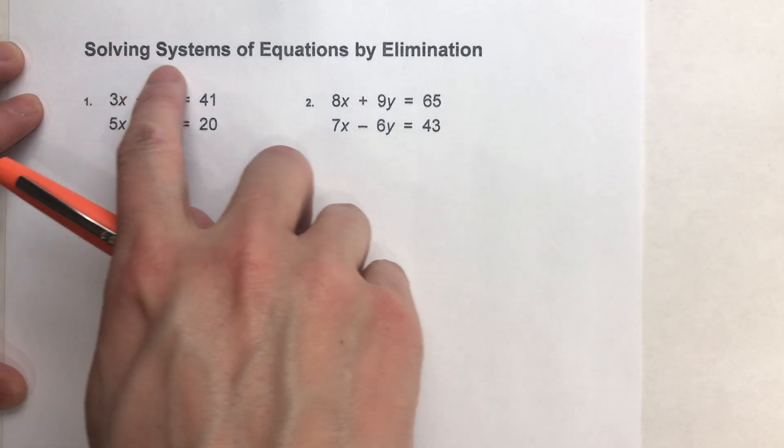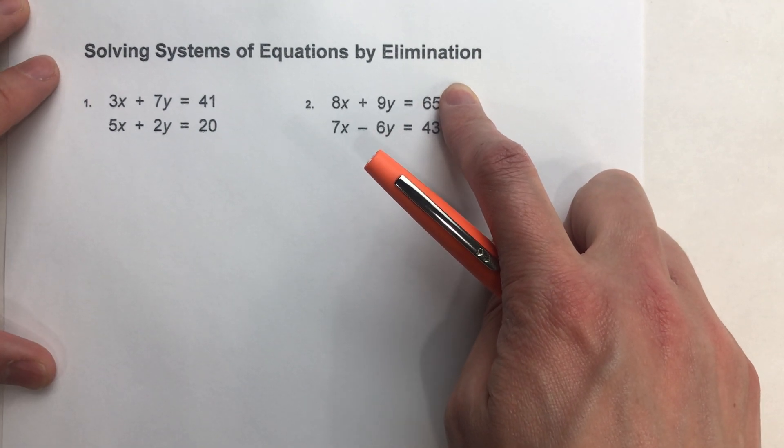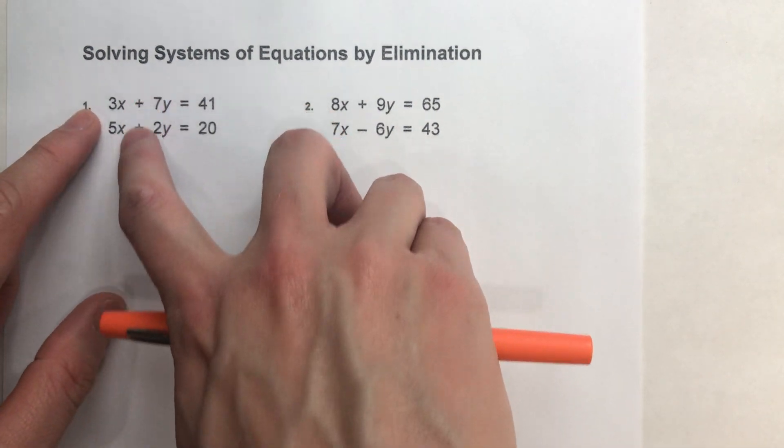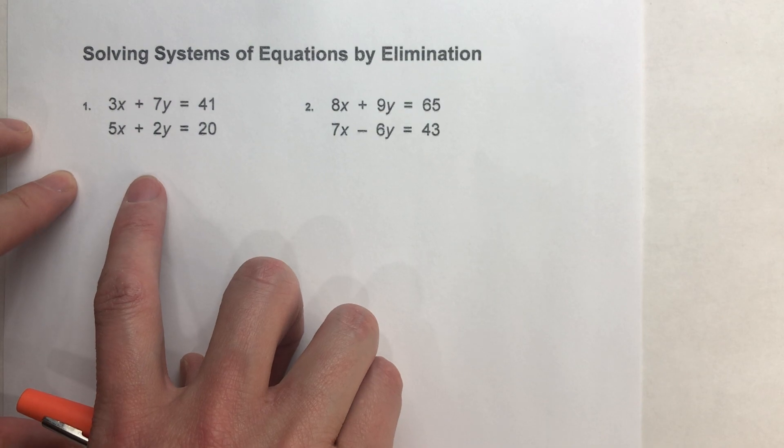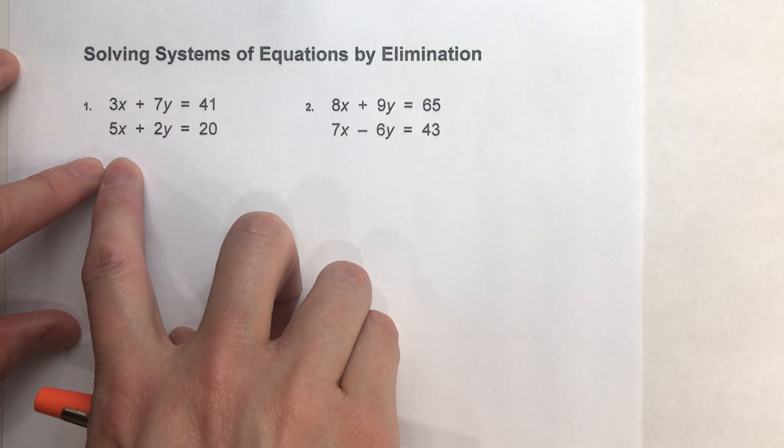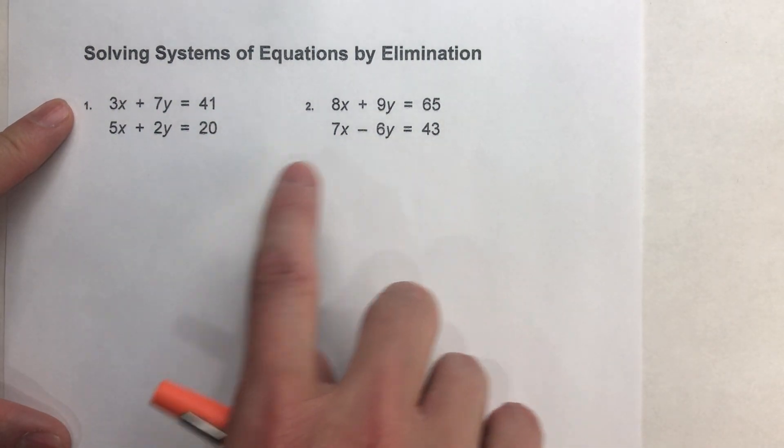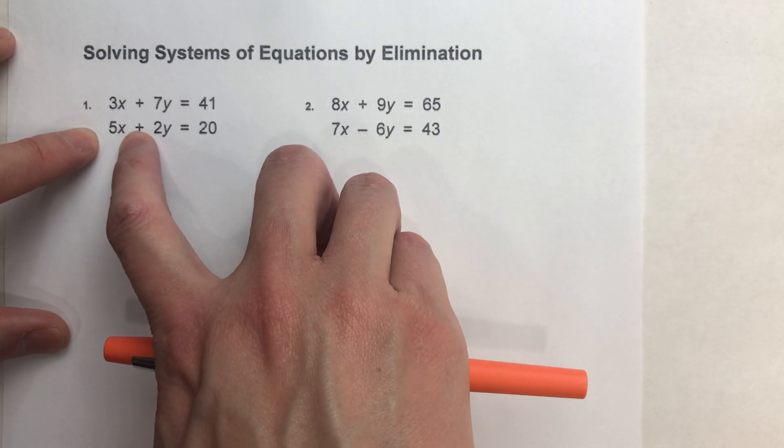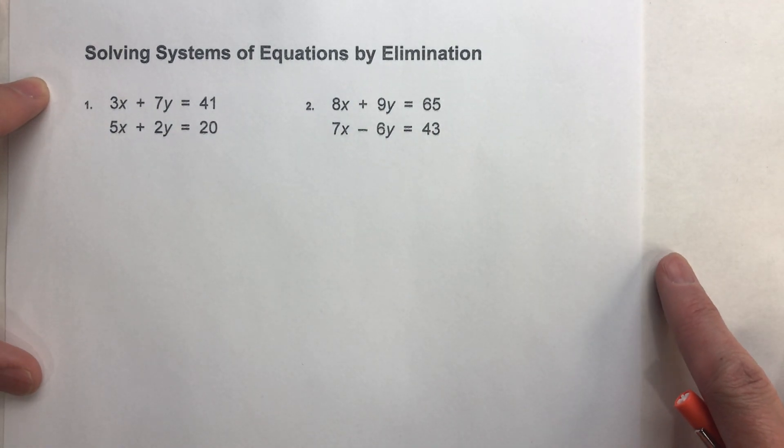So today we are solving a system of equations by elimination. Now in previous videos, I showed you that in an ideal situation, the amount of x's or the amount of y's match up in the two equations, meaning one's a positive amount and one's the exact opposite but a negative amount. And notice, we do not have that situation in these two examples today. We've got 3x and 5x.